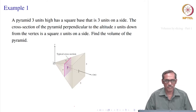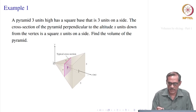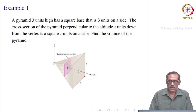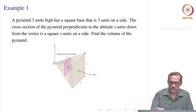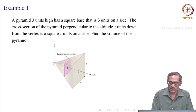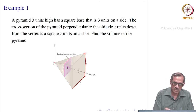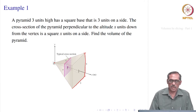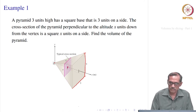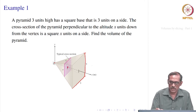Let us take an example. We have a pyramid 3 units high with a square base, where each side of the base is 3 units. The x-axis is taken along the altitude. The tip of the pyramid is at the origin. The cross-section of the pyramid perpendicular to the altitude x is a square. At a point x units down from the vertex, each side of the square cross-section is x units. So the cross-sectional area A(x) equals x squared.